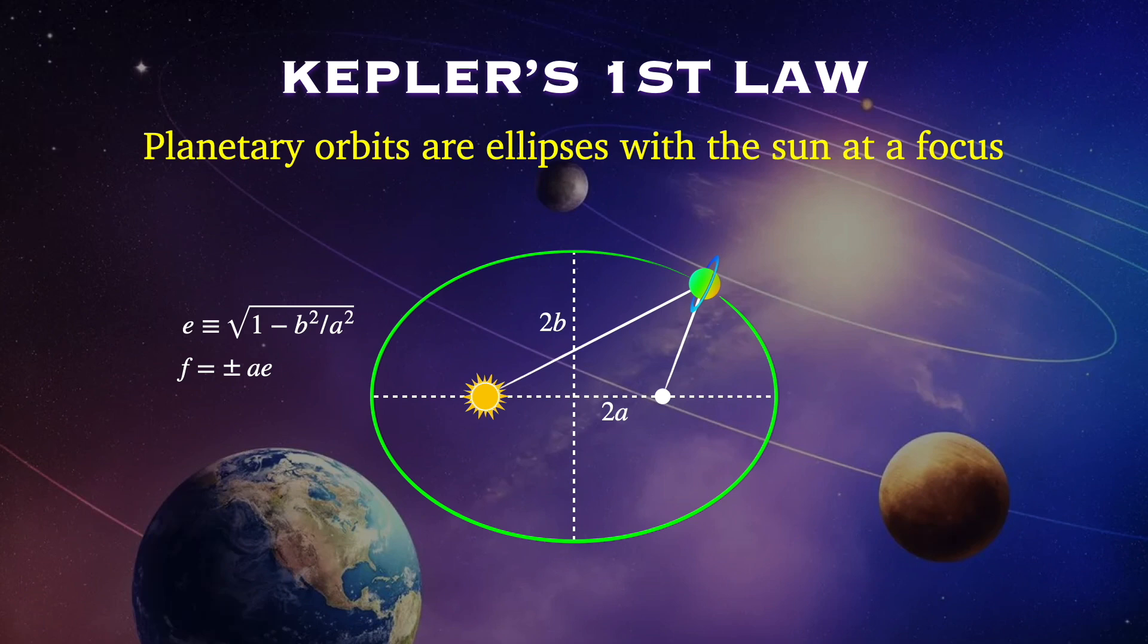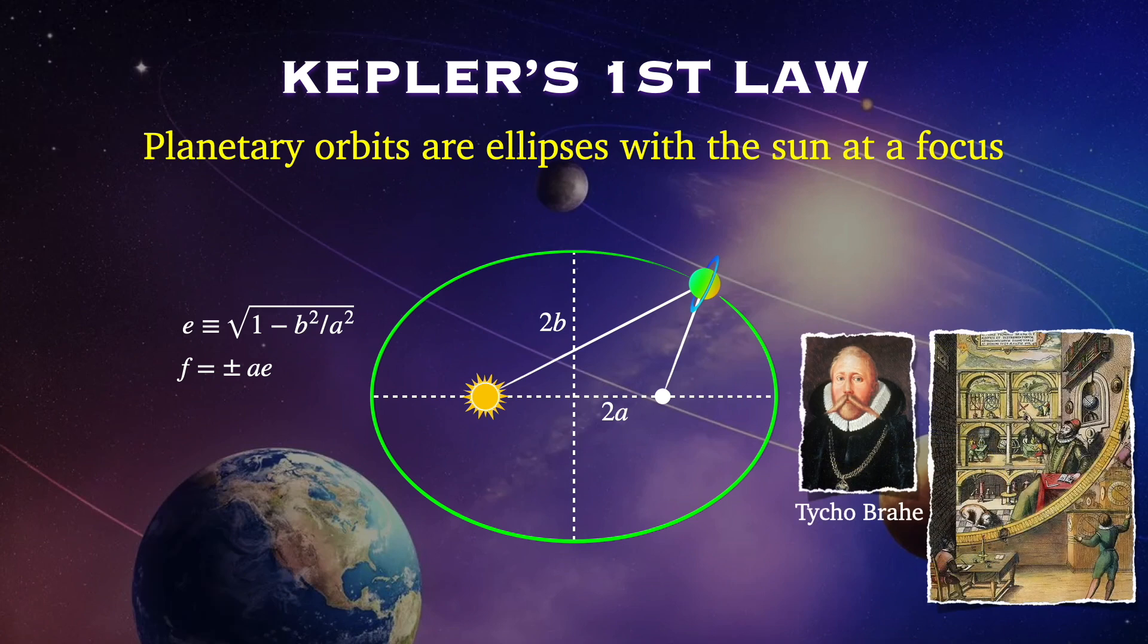Now, most astronomers at the time would have said, that's good enough for government work, but Kepler was so convinced by the precision and accuracy of Tycho Brahe's measurements that he decided this error was too big. So, he scratched it and modified it. And when he moved the sun from the center to a focus point, he got a better match.